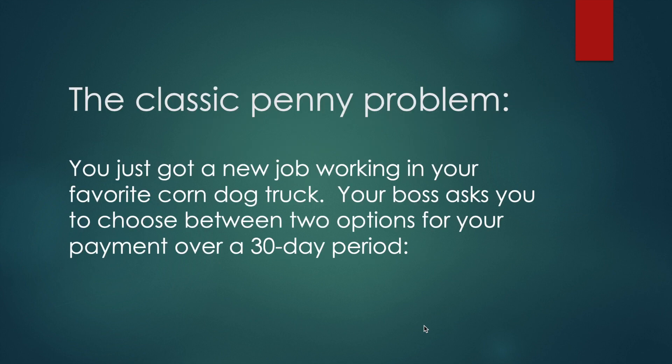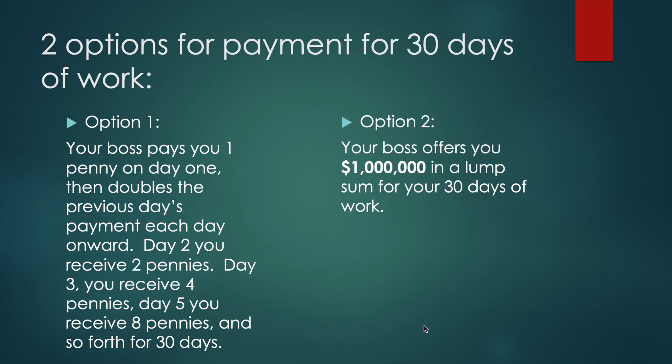So we have the classic penny problem. You just got a new job working in your favorite corndog trek. Your boss asks you to choose between two options for your payment over a 30-day period. Option one is that your boss pays you one penny on day one, then doubles the previous day's payment each day onward. Day two you receive two pennies, day three you receive four pennies, day five you receive eight pennies, and so forth for 30 days.